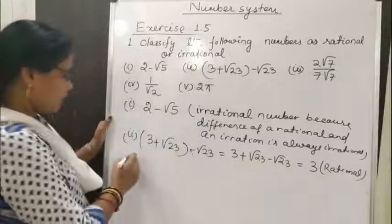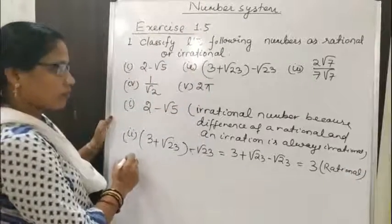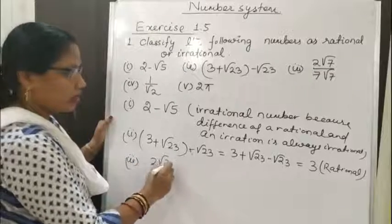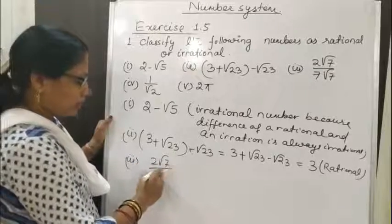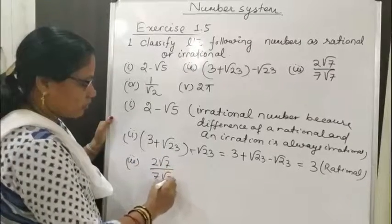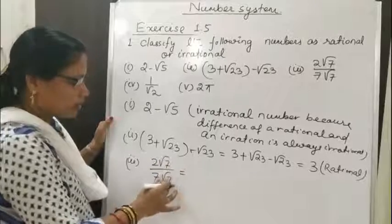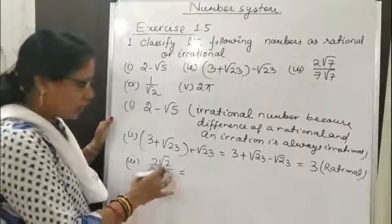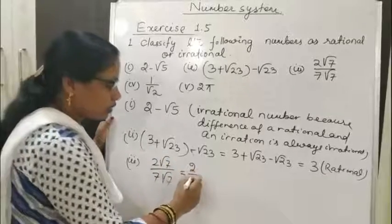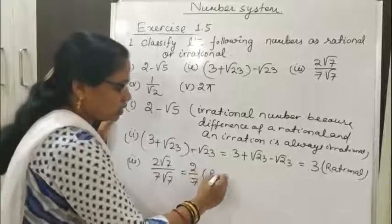Bit 3: 2√7 divided by 7√7. The √7 divided by √7 is 1, so this becomes 2 by 7. So this is a rational number.